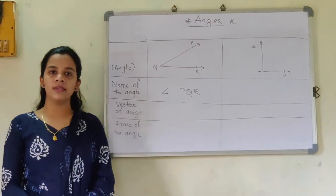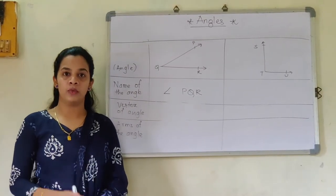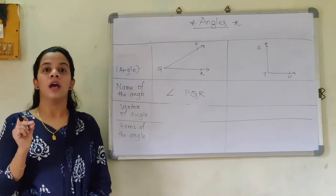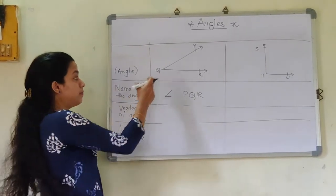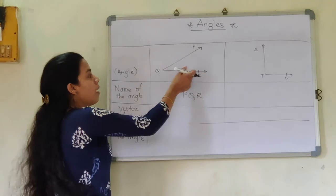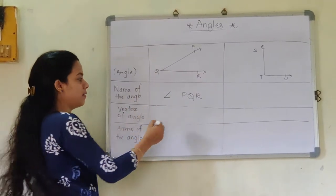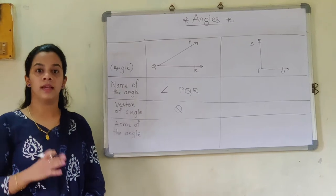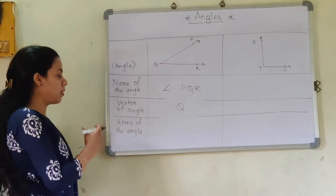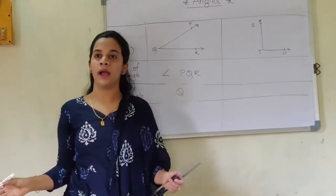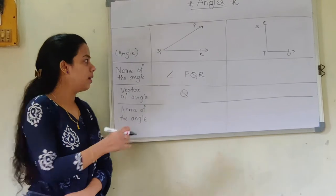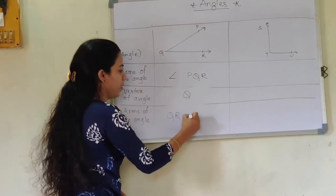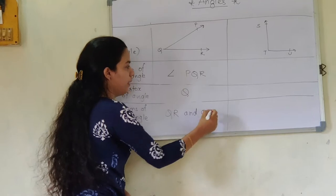What is the vertex of this angle? Vertex means the corner. Can you tell me where these two arms are intersecting? They are intersecting at point Q. So Q is the vertex. And what are the arms? Arms means two hands — the two arms are QR and QP.